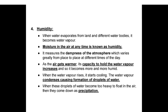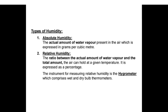Humidity: when water evaporates from land and water bodies it becomes water vapor; the moisture in the air at any time is known as humidity, measuring the dampness of the atmosphere. As air gets warmer its capacity to hold water vapor increases. When water vapor rises it starts cooling; water vapor condenses causing formation of water droplets, which when too heavy come down as precipitation. Types of humidity: absolute humidity — the actual amount of water vapor in the air, expressed in grams per cubic meter; relative humidity — the ratio between the actual amount of water vapor and the total amount the air can hold at a given temperature, expressed as a percentage. Relative humidity is measured by a hygrometer comprising wet and dry bulb thermometers.